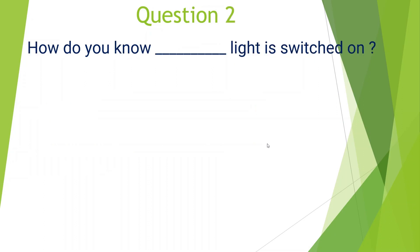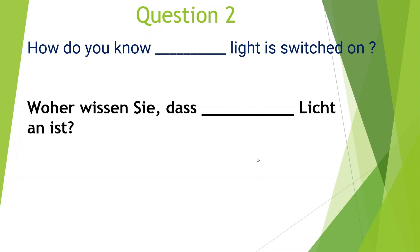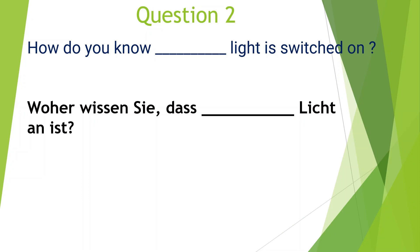The next question would be something like: 'How do you know that the light is switched on?' — meaning, how do you know that the hazard light is switched on from inside your car? So let's look at the answers.